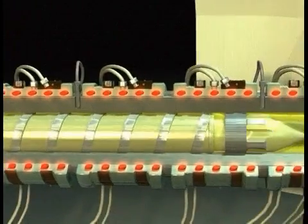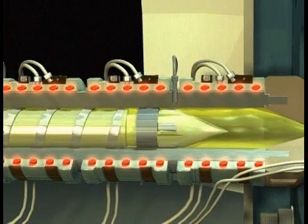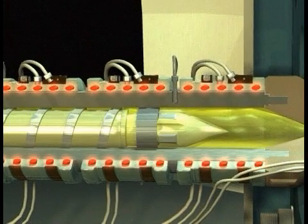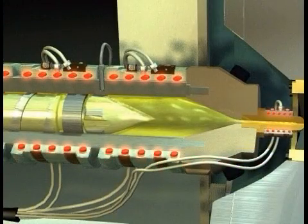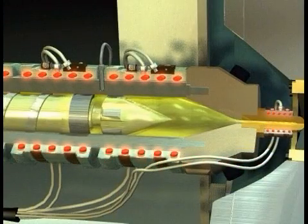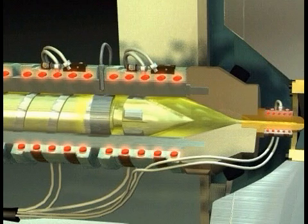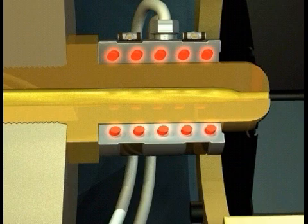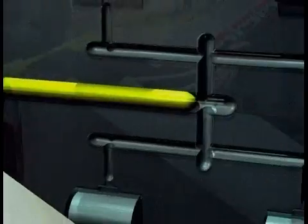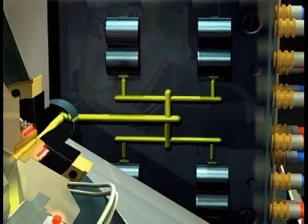When enough melted plastic has accumulated ahead of the screw, the screw stops rotating. Then the screw, acting as a plunger, pushes the melted plastic out of the injection barrel, through the nozzle, sprue, runners, gates, and on into the mold cavities.